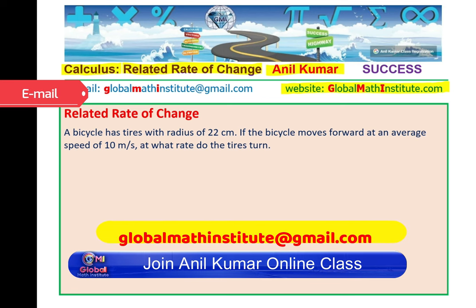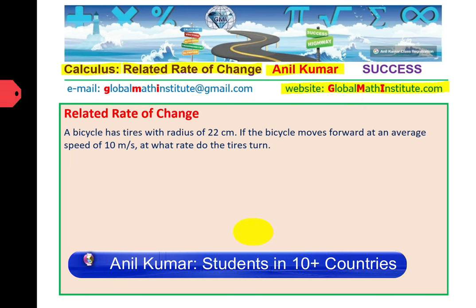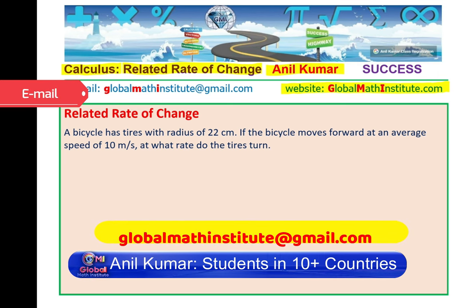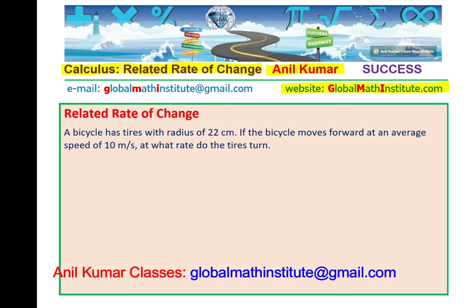Let me read the question first. It says: a bicycle has tires with a radius of 22 centimeters. If the bicycle moves forward at an average speed of 10 meters per second, at what rate do the tires turn?